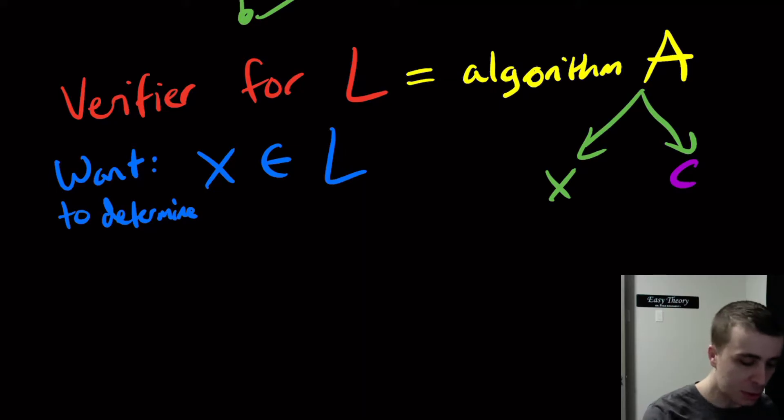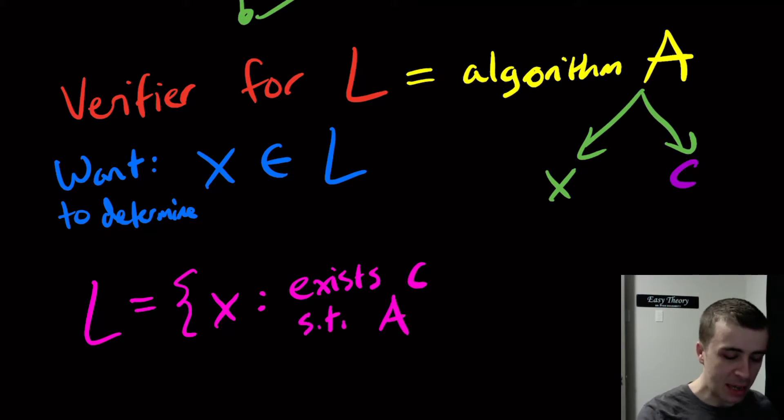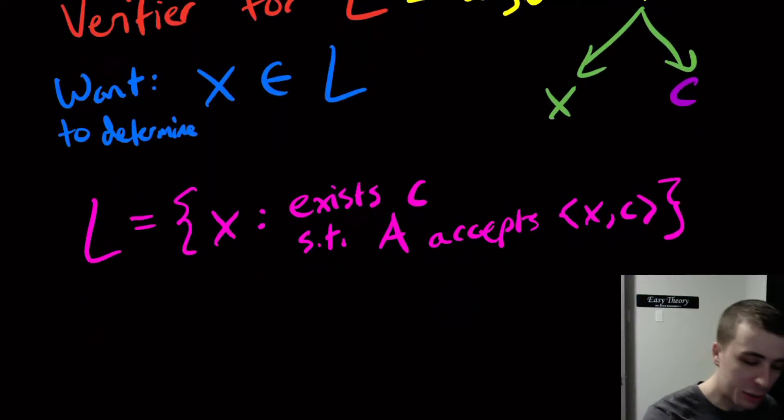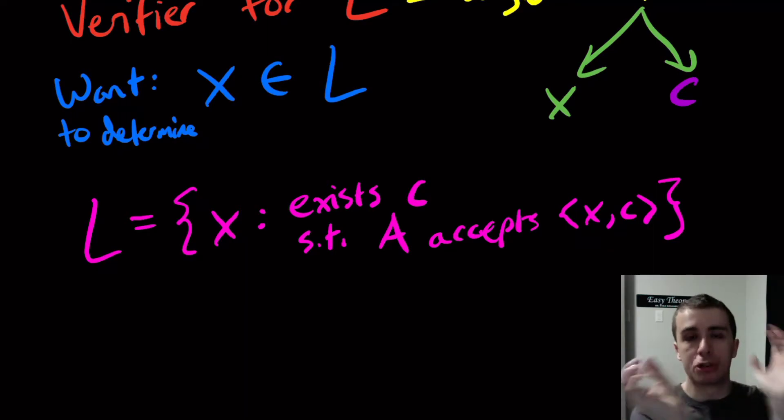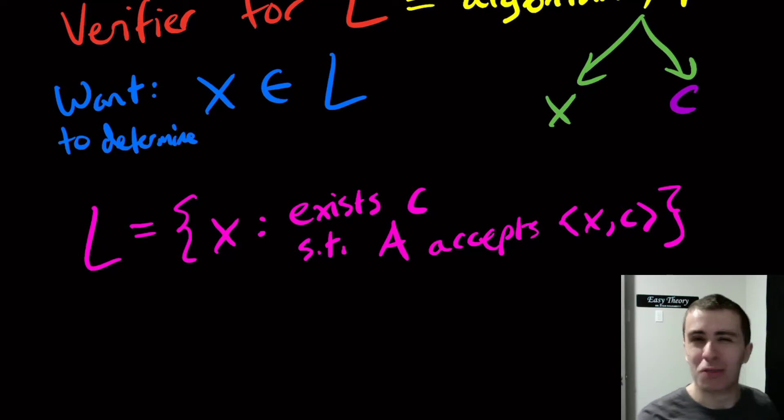There's some correspondence between what the algorithm does and what the language is. The language is going to be all the strings X such that there exists a C such that the algorithm A accepts X comma C. The language can be defined as the set of all strings X such that there is this magic string C where the algorithm accepts the two together. The C is something called a certificate.